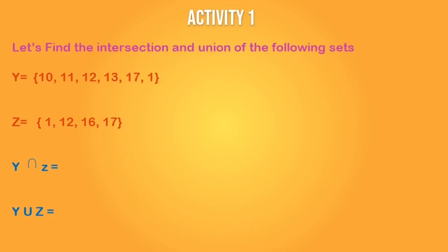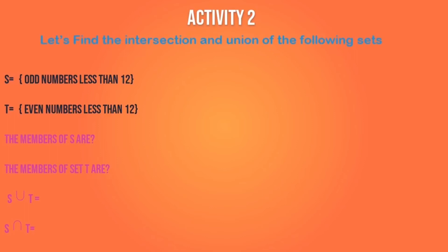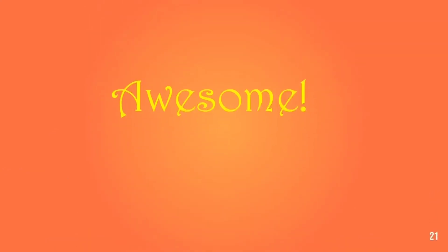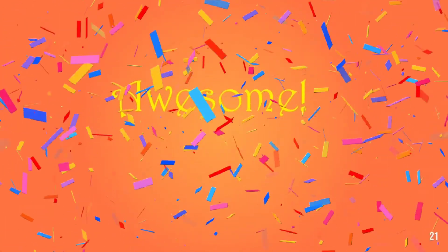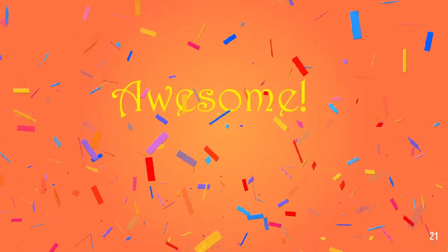Here is Activity One. You are to find the intersection and the union of the following sets. Remember, the union is everything in both sets — you only write each element once. The intersection is what is common between the two sets. The union is everything from sets S and T; again, you only write them once. Awesome! I know you have done an excellent job. Kudos to you!